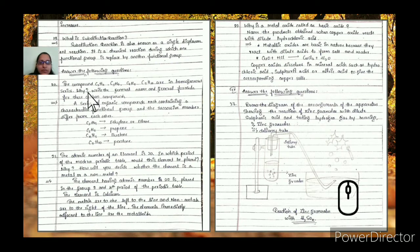Next question: the compounds C2H4, C3H6, C4H8, C5H10 are a homologous series. What is the general name and general formula of these carbon compounds? You can see that a series of organic compounds containing characteristic functional groups with successive numbers differ from each other. C2H4 is ethene, then propene, butene, pentene. These are unsaturated carbon compounds having double bonds, also known as alkenes.